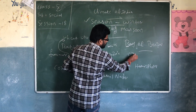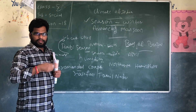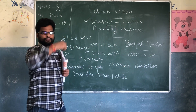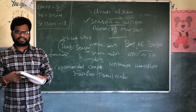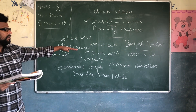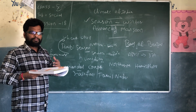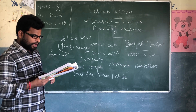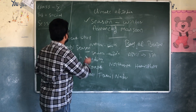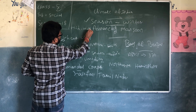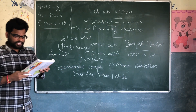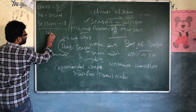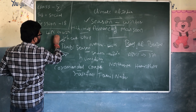By mid-May, the temperature can touch 41 to 42 degrees Celsius. Last summer, we have seen more than 45 degrees Celsius in India. When you go out, within seconds your body will get heat. It is very dangerous.